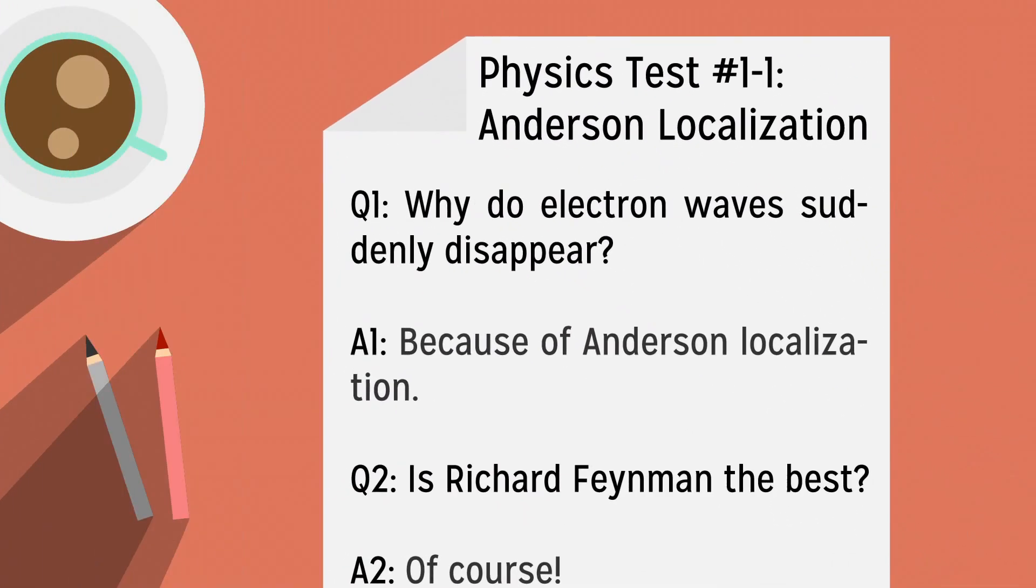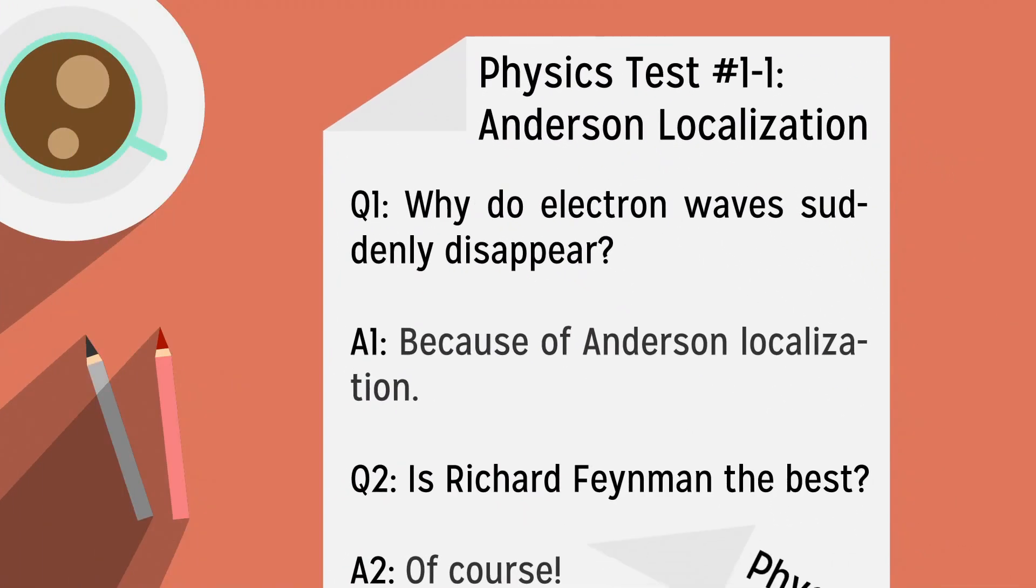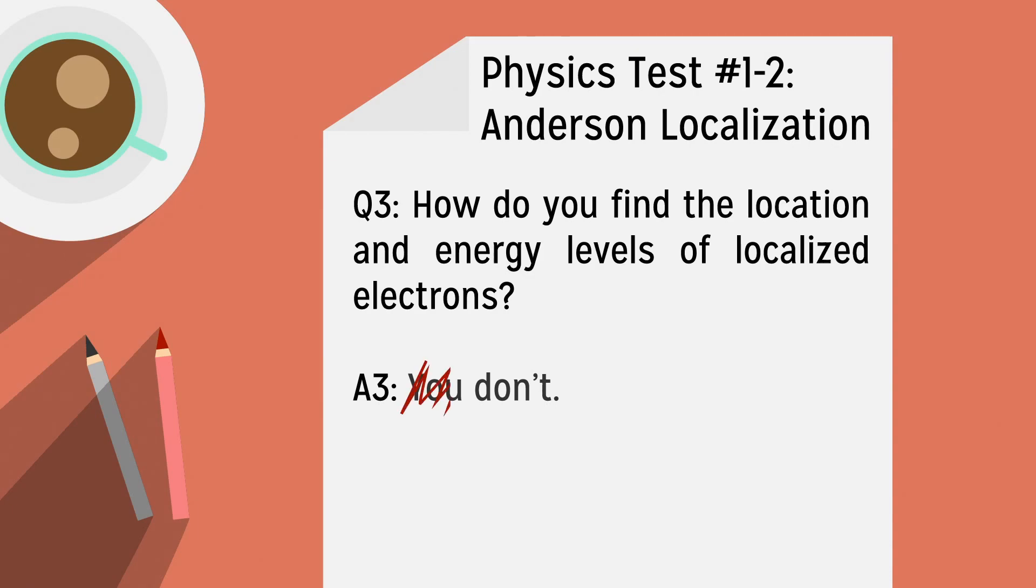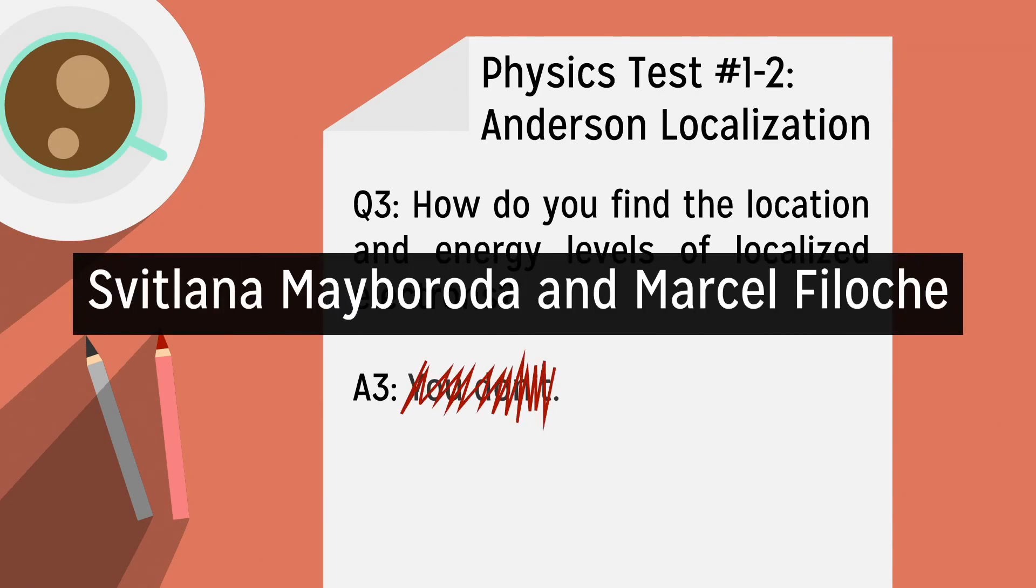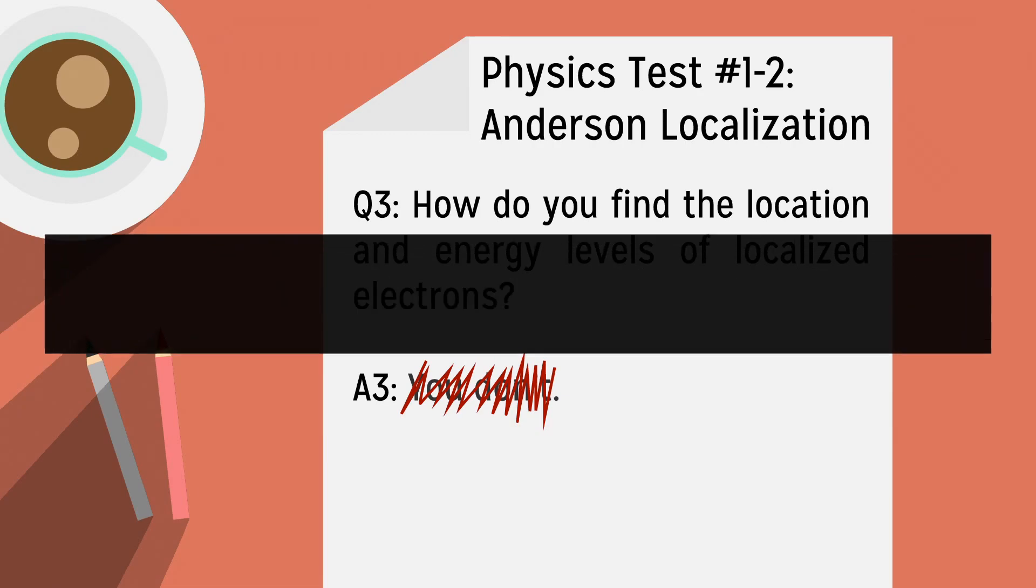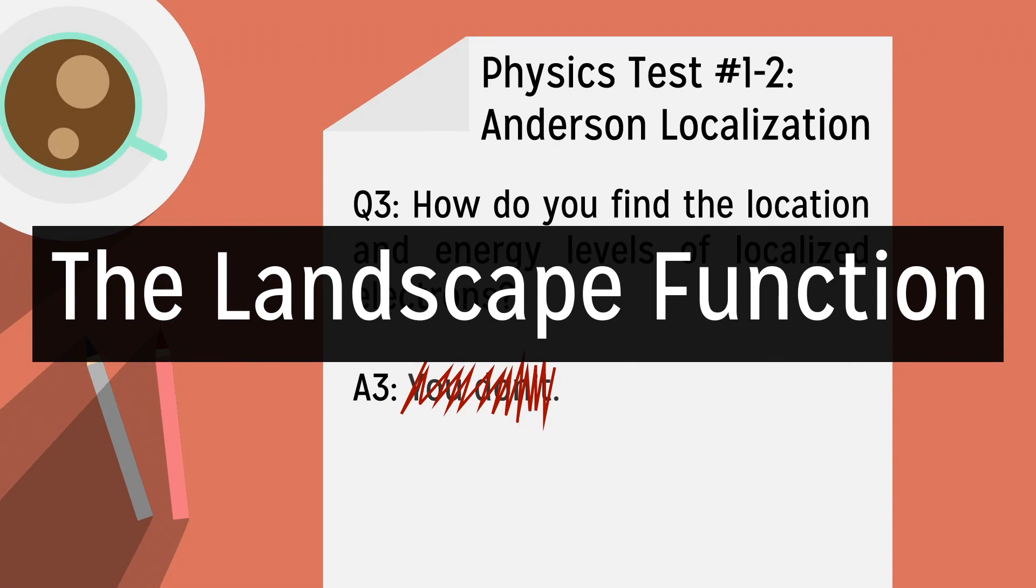Though this is a simple concept, the calculation of the location and energy levels of localized electrons has not been solved since the discovery of Anderson localization 40 years ago. But very recently, mathematician Svetlana Jitomirskaya and physicist Marcel Filoche created an equation that does exactly that, the landscape function.